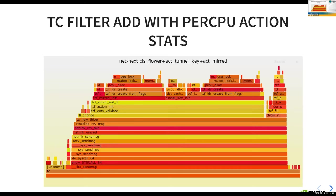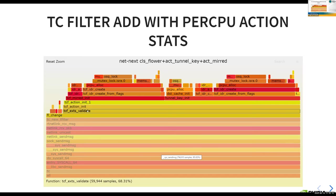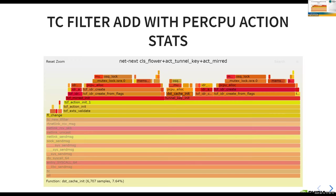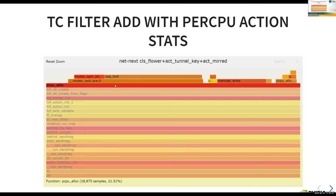A flame graph of filter update using per-CPU allocator for stats shows flower_change calling actions init. Using the two most common actions — tunnel_key and mirred — both consume significant resources through the per-CPU allocator. Zooming in, per_cpu_alloc uses a lot of time, and most of it is again just spinning on the mutex, since the global mutex is highly contended.